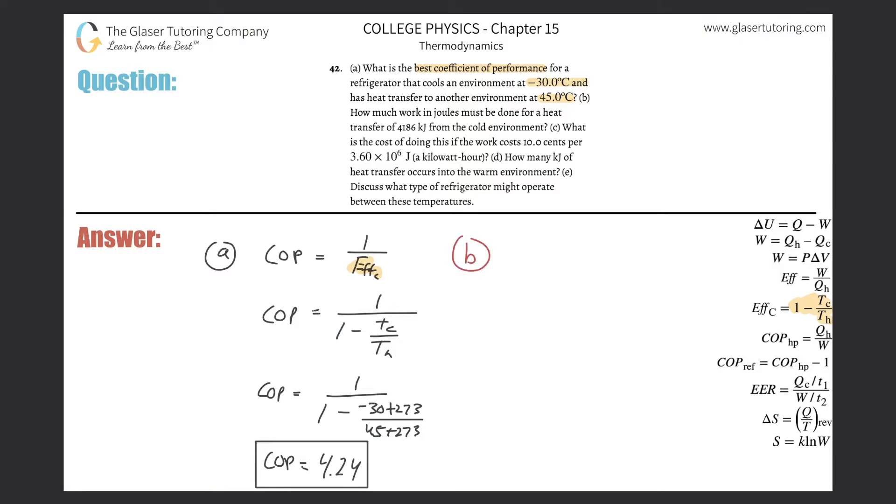So letter B. It says, how much work in joules must be done for a heat transfer of 4,186 kilojoules from the cold environment? So we'll use this formula over here. It says the coefficient of performance is going to equal the heat donated to the hot environment divided by the work, or the heat supplied by the hot environment. But they told us here, they gave us basically a heat transfer from the cold environment. So I cannot use that number in this formula. I have to find Q sub C in here. But I do realize that I have a formula that's going to relate Q_C, W, and Q_H, which might be helpful.